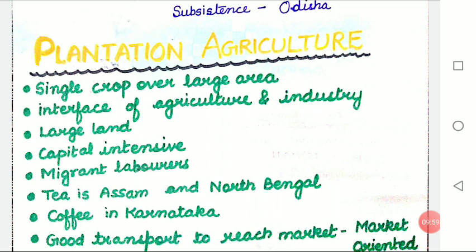Plantation farming began with colonization of the equatorial and monsoon lands by European countries. The countries were located in Southeastern and Southern Asia, Africa and Latin America. After their independence, these countries continued to specialize in plantation farming, producing high-quality crops for trade. The main characteristics of plantation farms are large estates specializing in monocrop — mono means single — production. Every work like preparing the land, raising seedlings and nurseries is done on scientific lines.